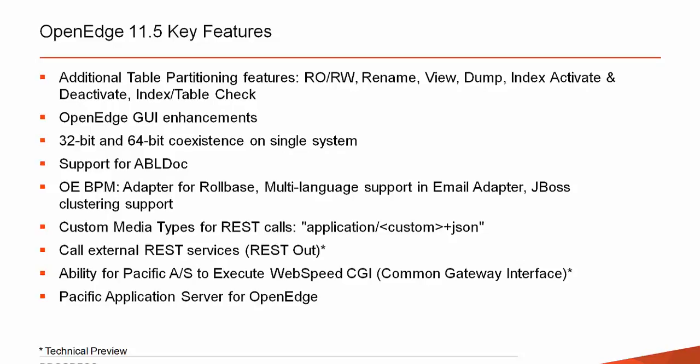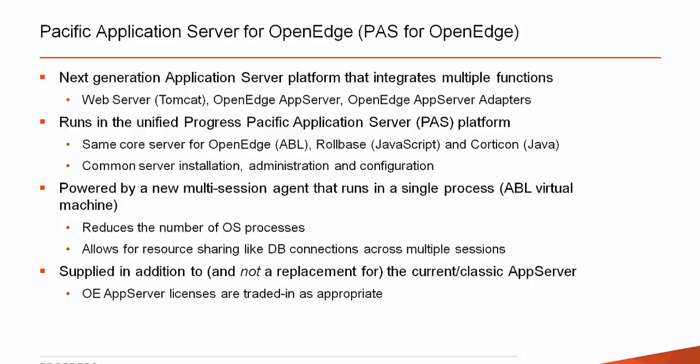For WebSpeed users, we have a strategy of ultimately migrating them to be able to use the new Pacific App Server. The first step is to support the execution of CGI — part of WebSpeed — and have that operate with the Pacific App Server. These features are complete and believed to be working, but QA testing was not fully completed; any issues found would be resolved in the first service pack of 11.5, coming in a couple of months.